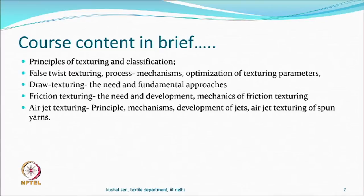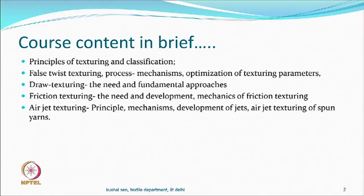Another process that is commercially successful is called air jet texturing. Instead of using thermal inputs or other mechanisms, you use air as a mechanism of deformation and entanglement to produce what we call air jet textured yarns. In this area you also have filament yarns, spun yarns, and so on.